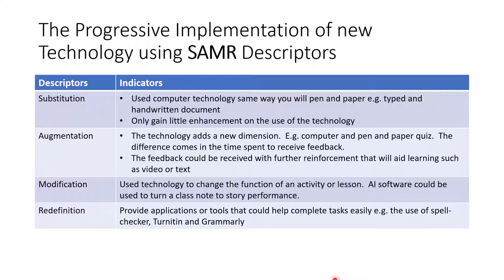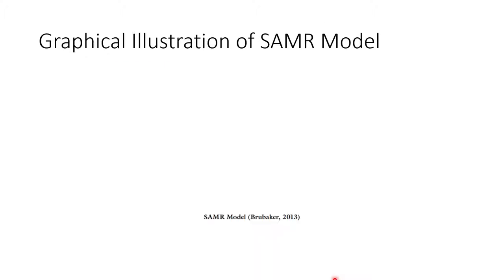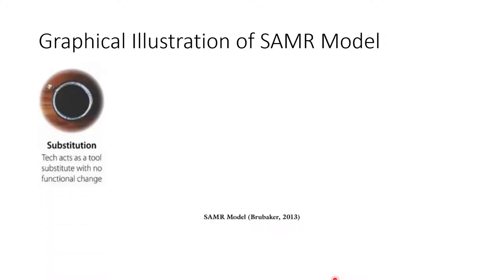The final descriptor is redefinition. This area provides applications or tools that could help complete tasks easily — for example, the use of spell checkers, Turnitin, and Grammarly. Now let's see the graphical illustration of the SMART model. Here, we talk about substitution: technology acts as a tool substitute with no functional change. It is just a tool.